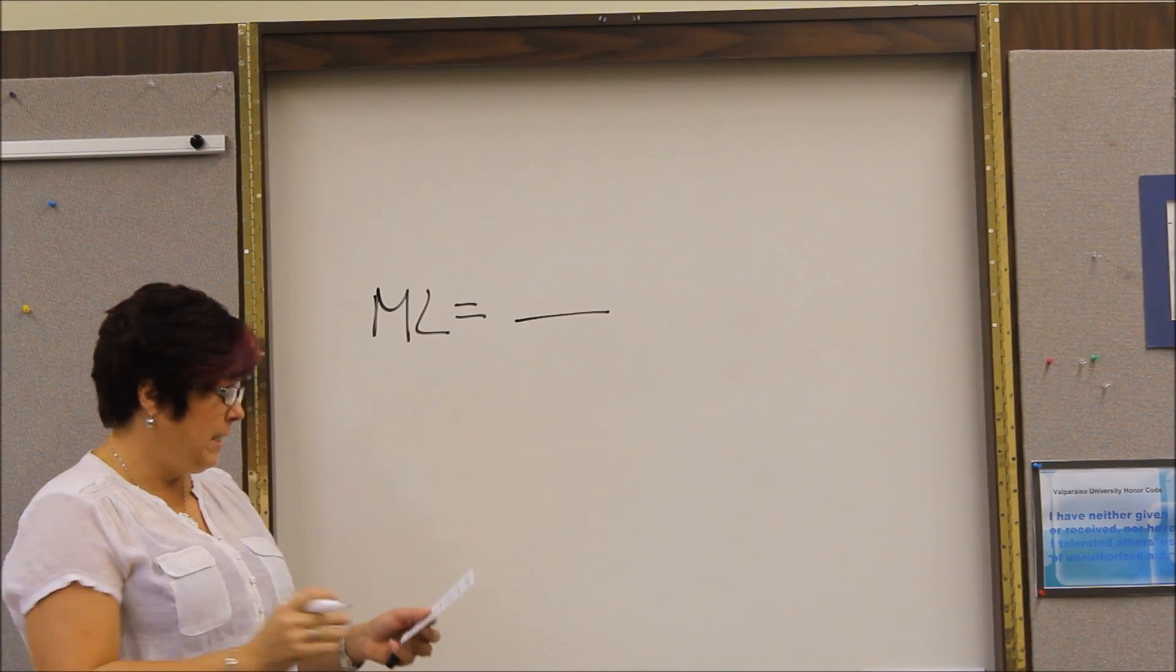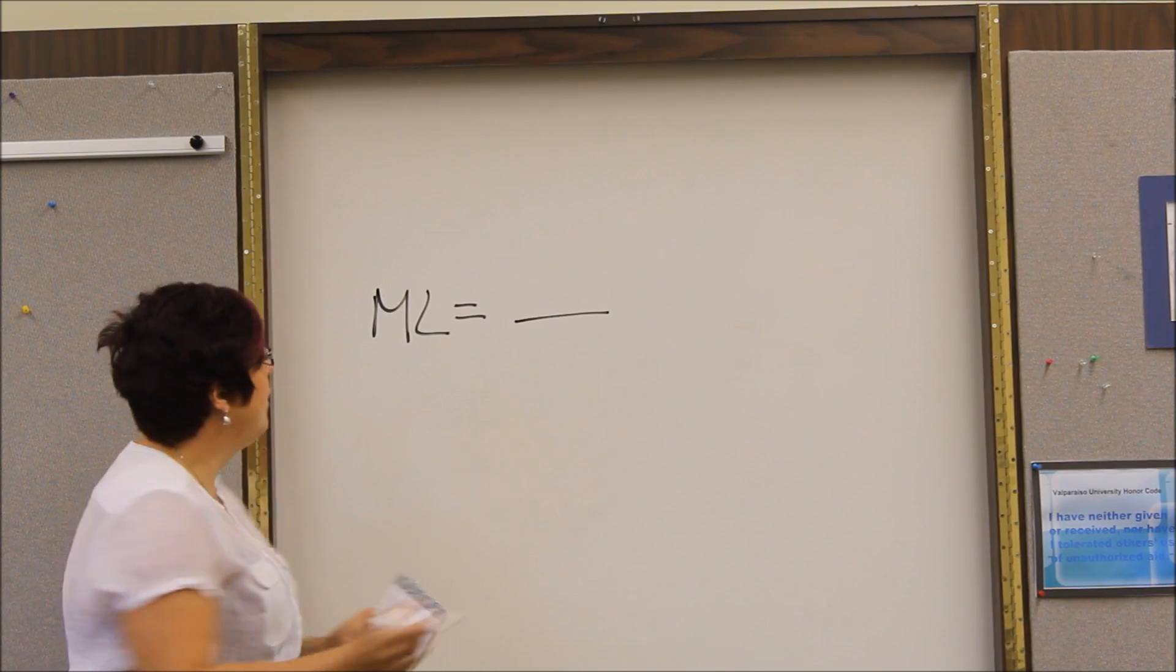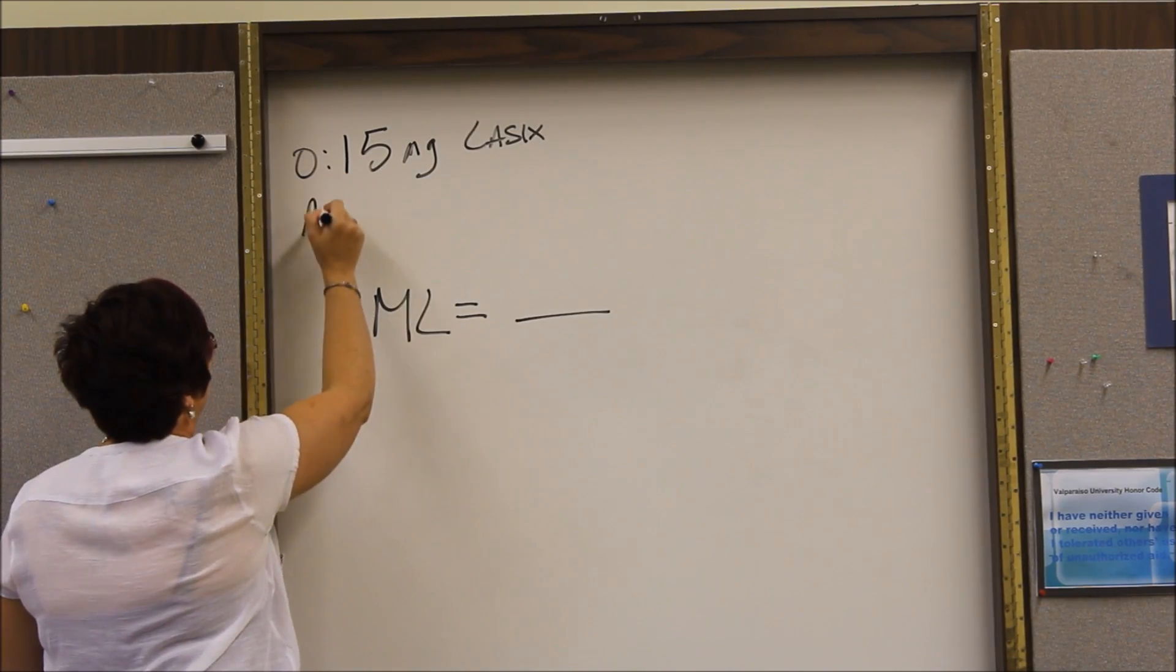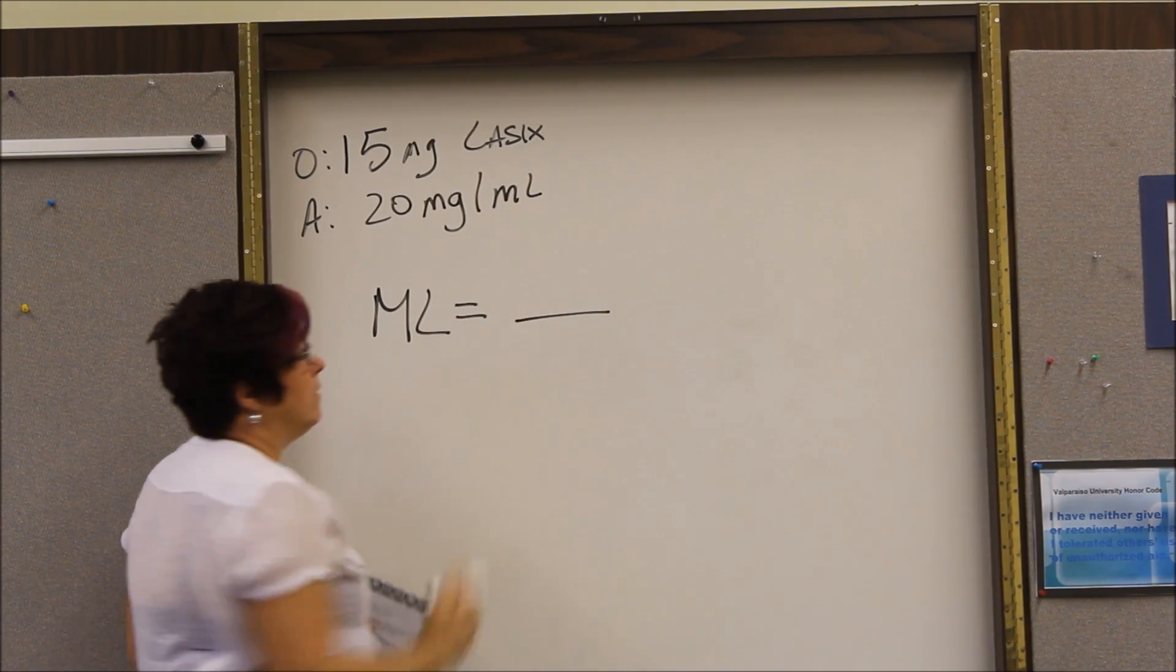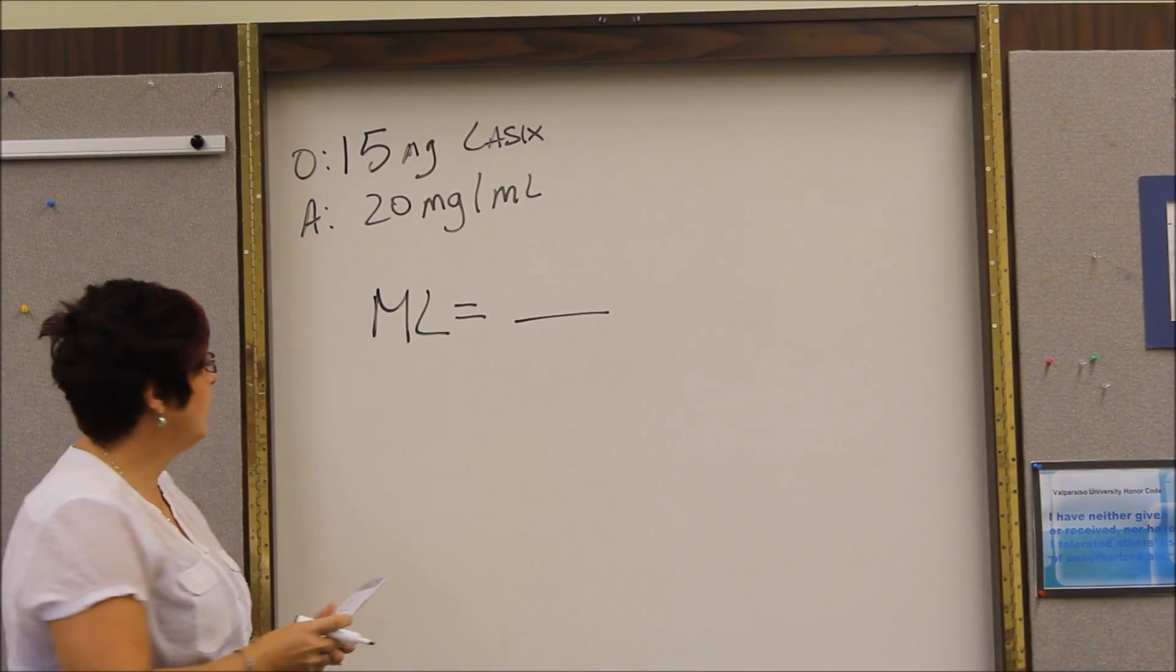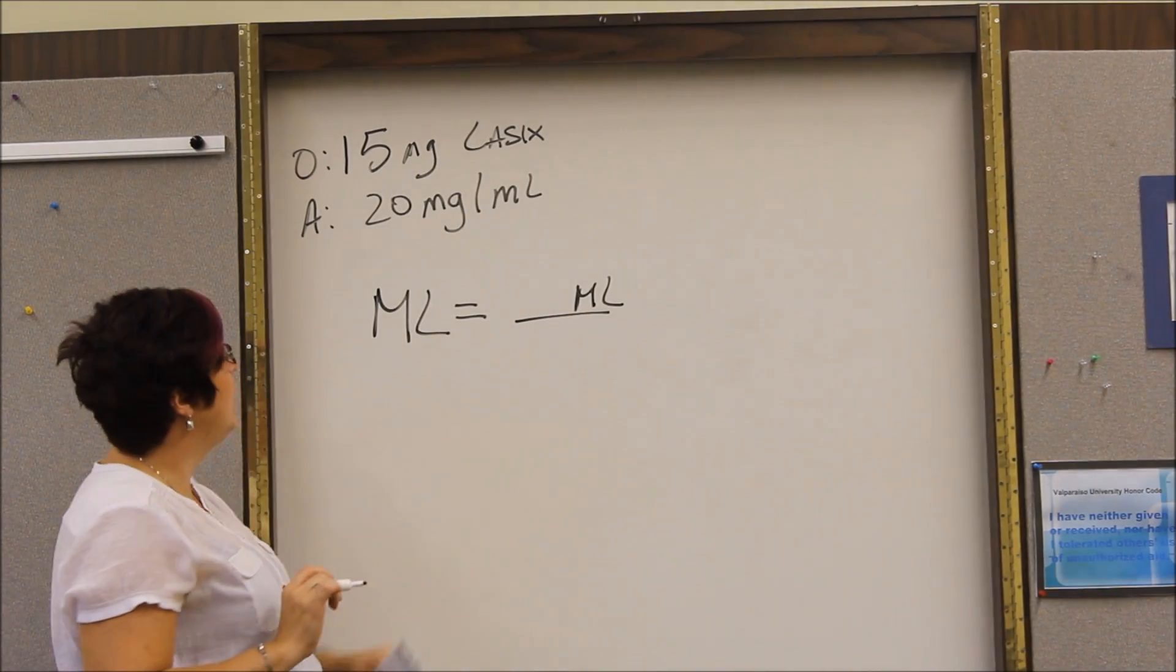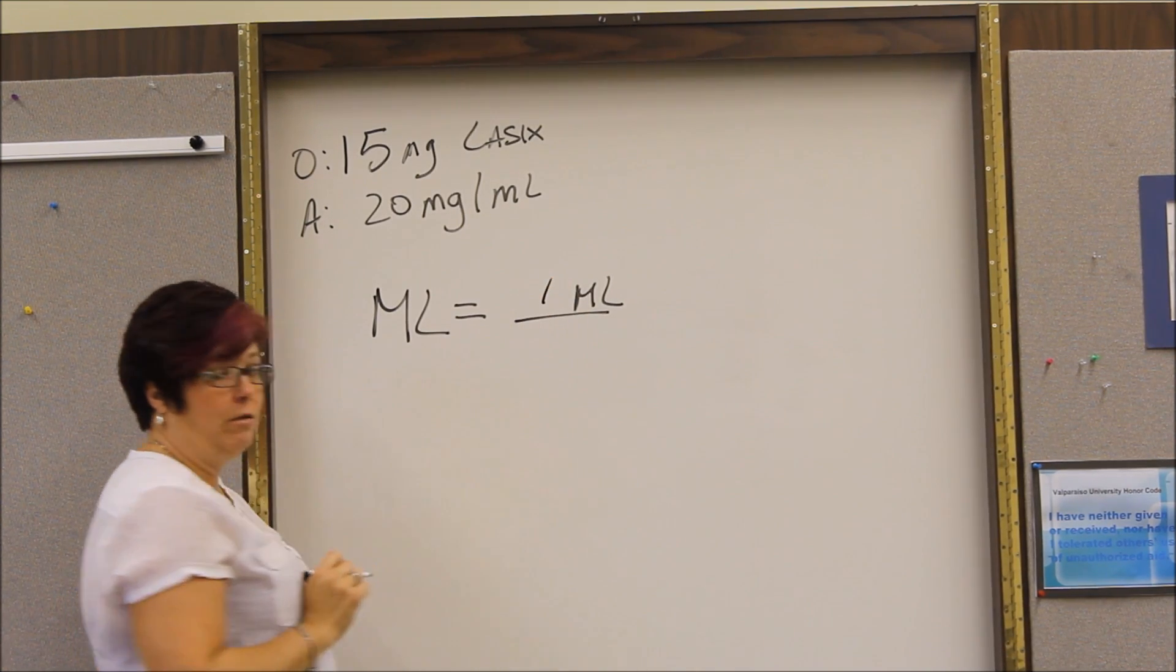Then we need to draw a line. Now let's say that we need to figure out Lasix. The doctor has ordered 15 milligrams of Lasix. That's what is ordered. What is available in the cart is a concentration of 20 milligrams of Lasix in one milliliter of solution. So whatever is to the left of the equal sign, that is the unit of measurement you have to start with on top to the right. So we look at the information we have. Here is our milliliter. So one milliliter goes there.